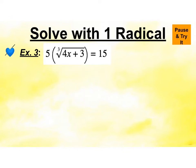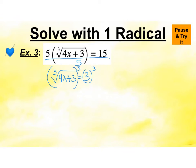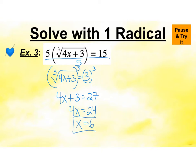Pause and try this. Here we still have one radical. It is a cube root. It's 5 times the cube root, so I'm going to divide everything by 5 to get the cube root equaling 3. I want to undo the cube root, so I'm going to raise both sides to the 3, and I get 4x plus 3 equals 27. Subtract the 3 and x equals 6. If I plug that back in, this is 24 plus 3, so we're looking at the cube root of 27, which is 3. 5 times 3 is 15, so that works.